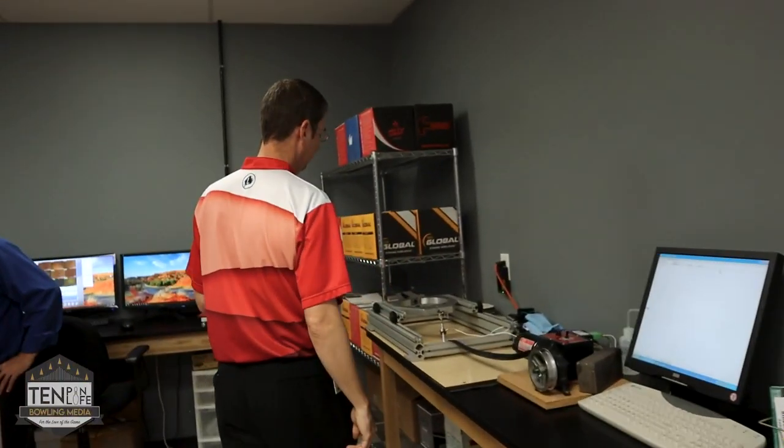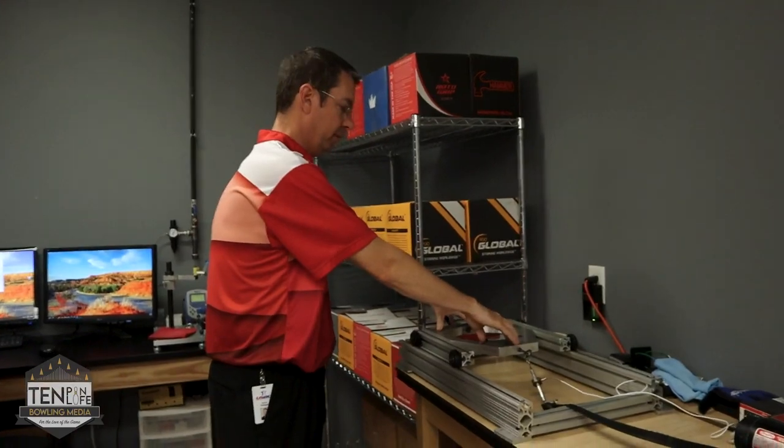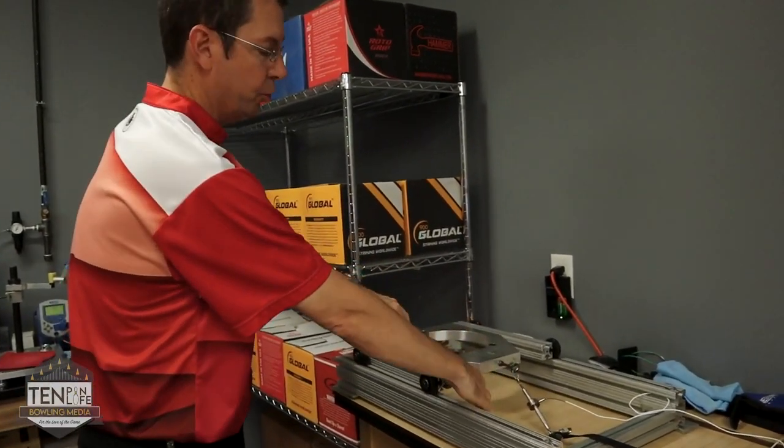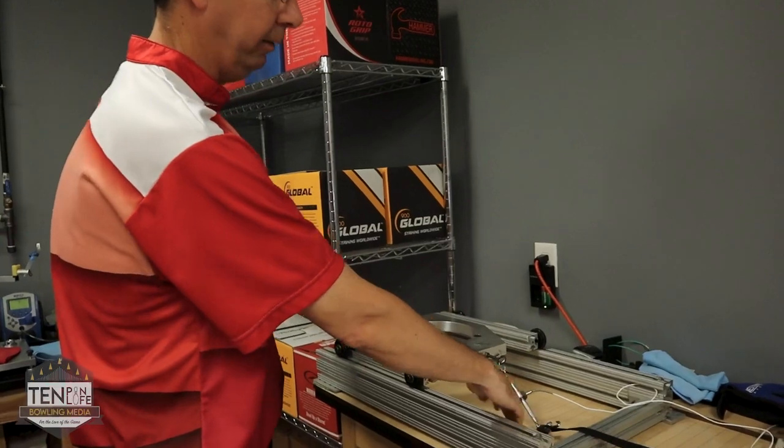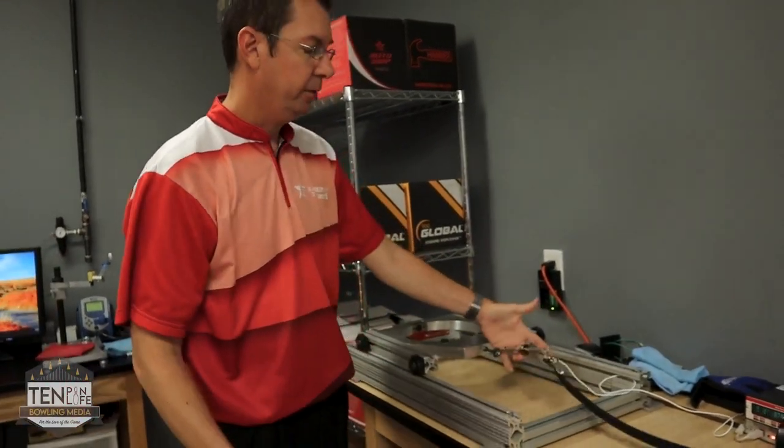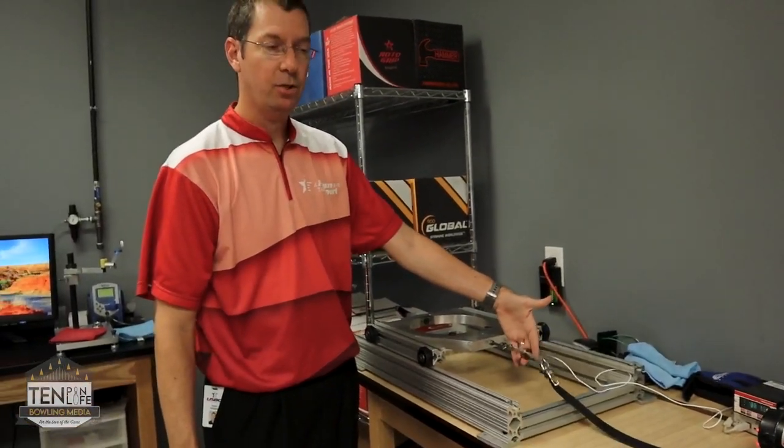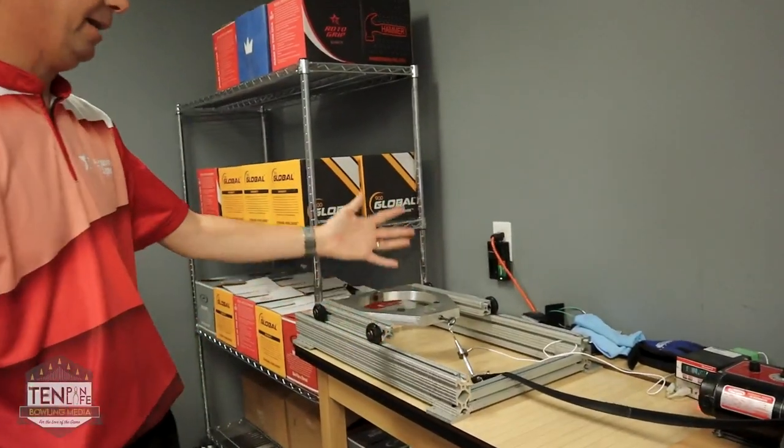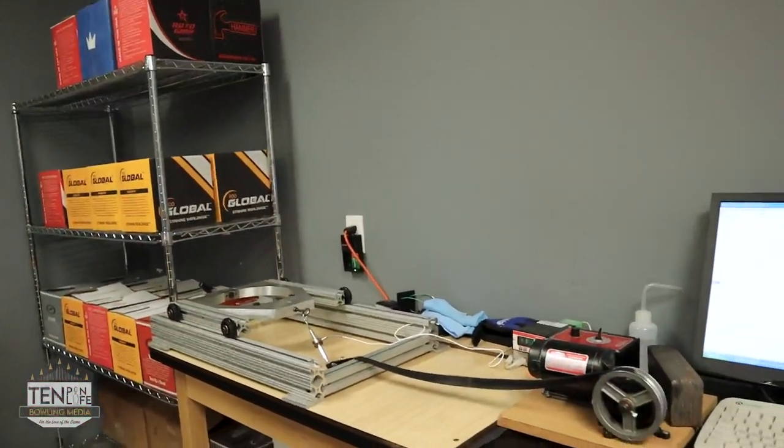We would then go over here to friction. This sled would just clamp a ball into that and we're dragging the ball across a dry lane panel. We have a force gauge on here that gives us how much force is being exerted, and we use a percentage of that to give us our friction factor.